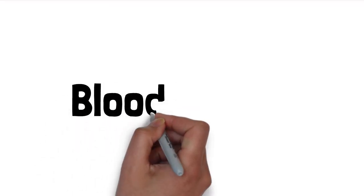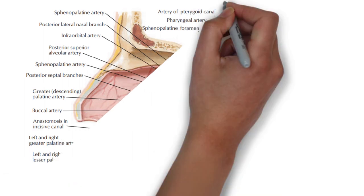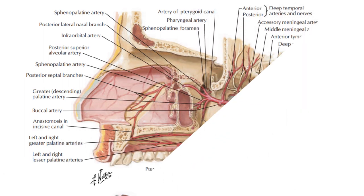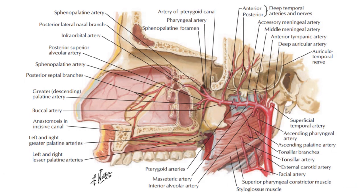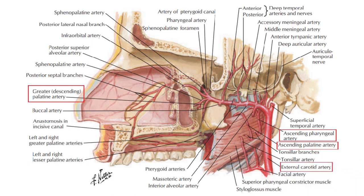Blood supply of the palate comes from three arteries: the greater palatine branch of the maxillary artery, the ascending palatine branch of the facial artery, and the palatine branch of the ascending pharyngeal artery. The maxillary, facial, and pharyngeal arteries are all branches that arise in the neck from the external carotid artery.